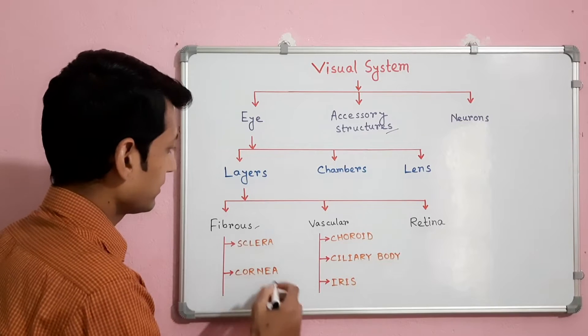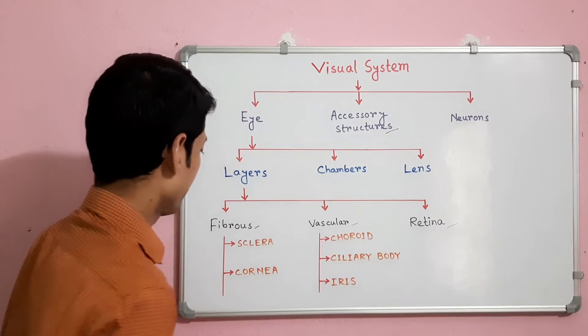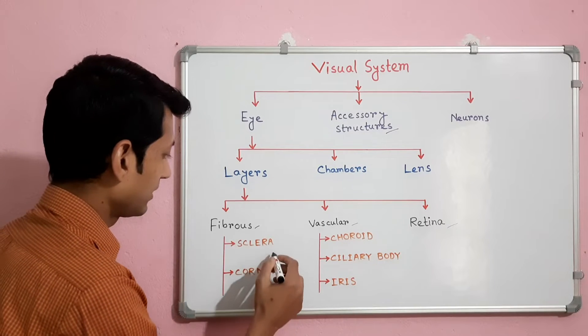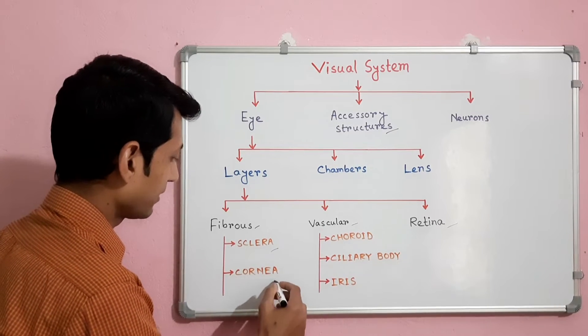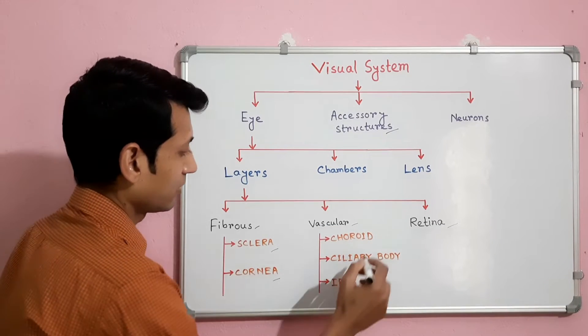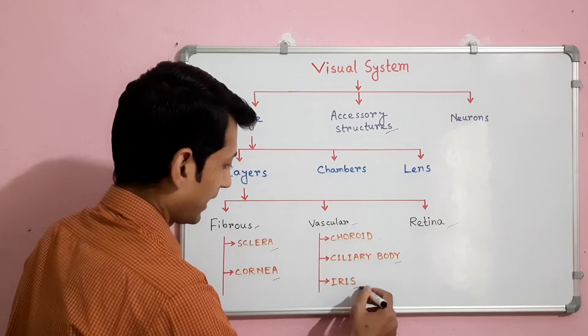The wall of the eye consists of three layers: fibrous layer, vascular layer, and the retina. The fibrous layer consists of sclera and cornea. The vascular layer consists of choroid, ciliary body, and iris.